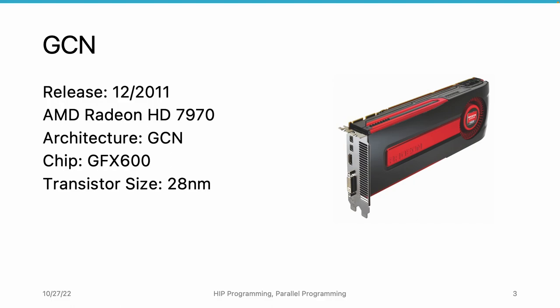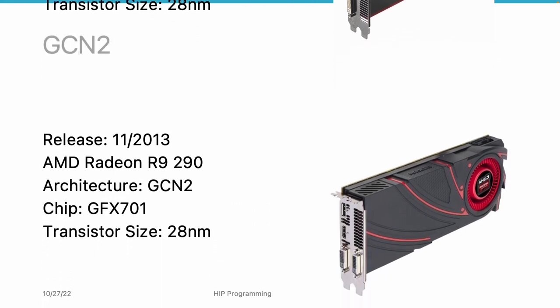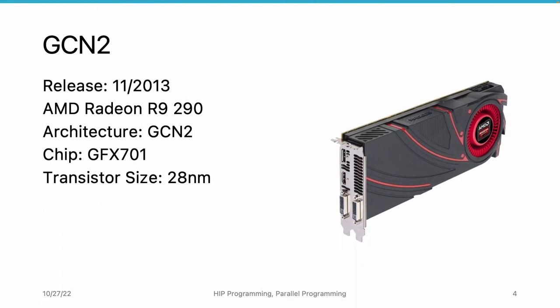The transistor size used by this chip is 28nm technology. About one year later, in November 2013, AMD released a GPU called R9290. The architecture is a newer version of the GCN architecture called GCN2, and the chip is GFX701. The chip name has three numbers: the first is the major version, the second is the minor version, and the third is the revision. This is a big generation upgrade from the previous GFX6 series, and the transistor size is still 28nm technology.